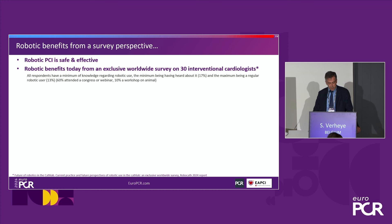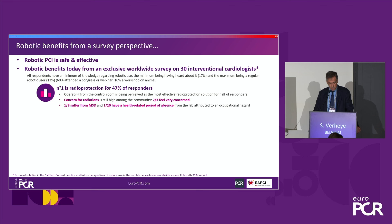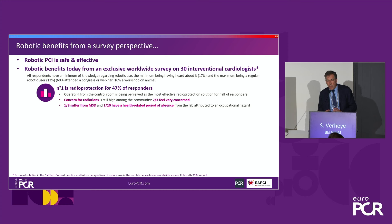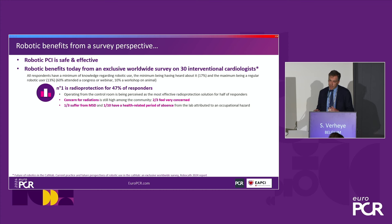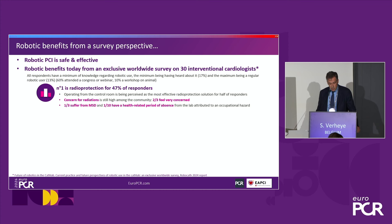Critically important: radiation exposure. There is more than 90% reduction in radiation exposure for the operator. Taking this into account, robotic PCI is undoubtedly safe and effective. Now, how is robotic PCI perceived by the community? In the survey, the number one benefit cited is radiation protection at 47% of responders — operating from the control room is perceived as the most effective radio protection. One in ten interventionalists has a health-related absence due to musculoskeletal disorders.